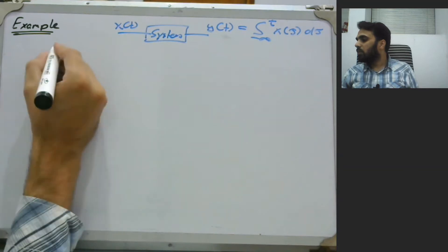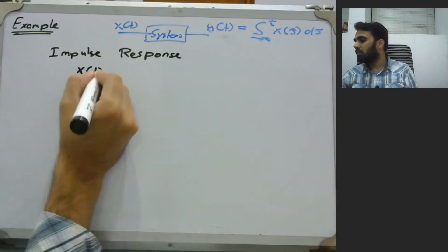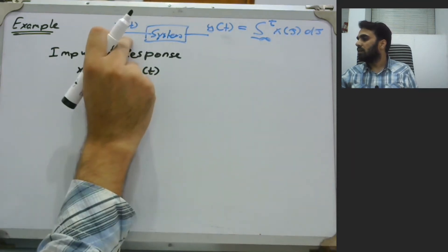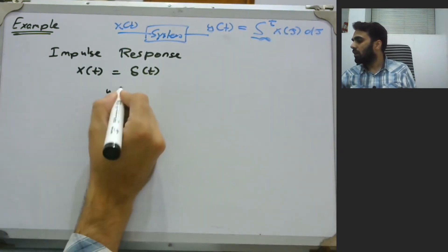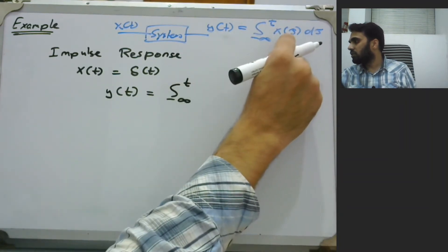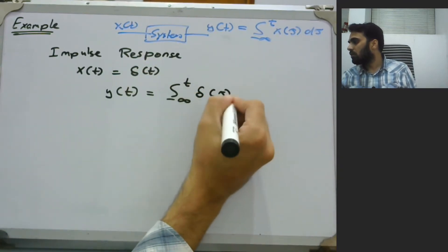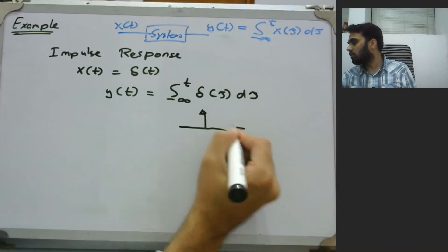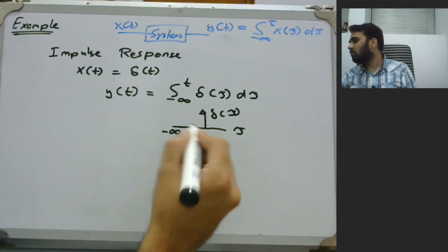In order to find the impulse response, we say the input X of T is simply delta of T. If the input is a Dirac delta function, the output is the impulse response. Setting Y of T with the input as the Dirac delta function — since the integration variable is TAU — we change this to TAU, so we would have the integral of delta of TAU d TAU.